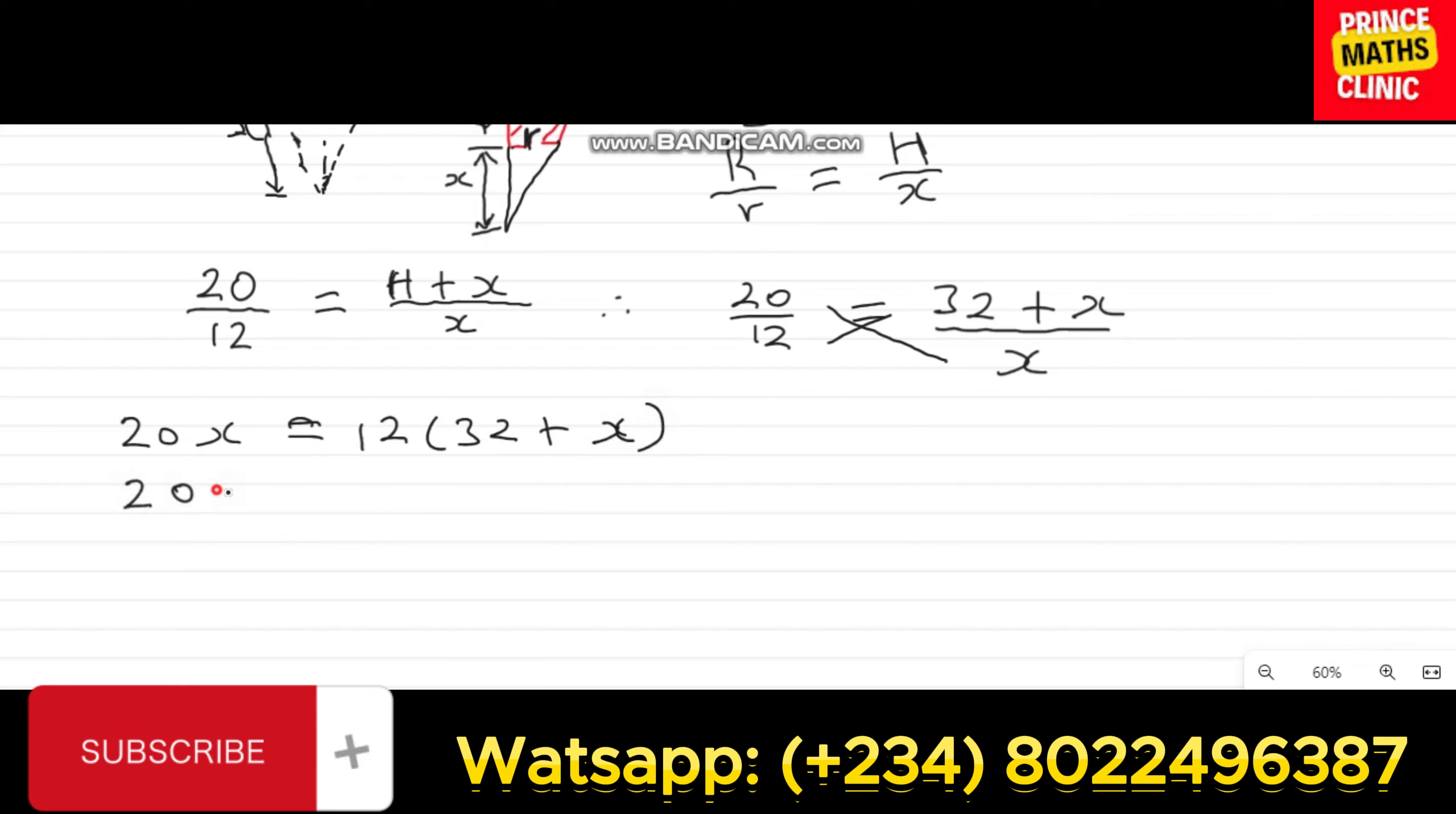So, by the time this now leads us to a linear equation, such that if the plus 12X crosses the equal to sign to this place, it changes to negative. So this becomes 20X minus 12X equals to 384. And 20X minus 12X becomes 8X equals to 384.